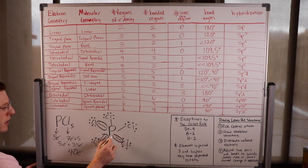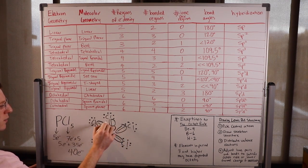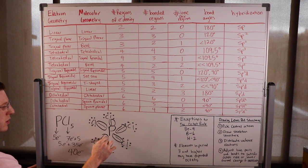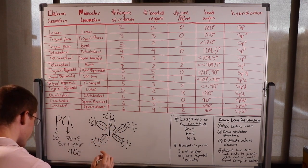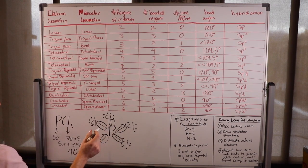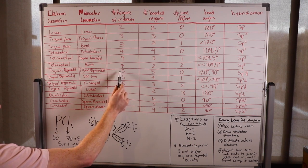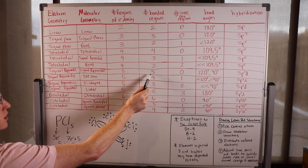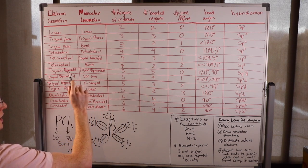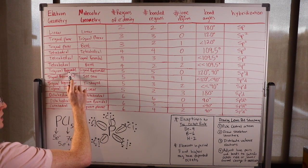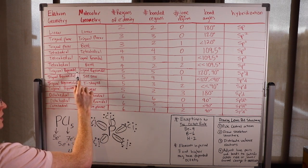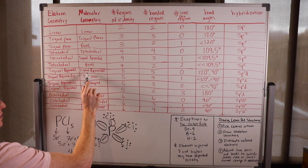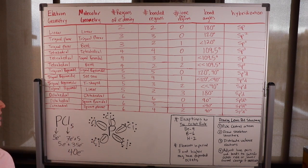Let's count up our regions of electron density. We have 1, 2, 3, 4, 5 regions of electron density and they're all bonded regions — 5 total regions of electron density, all bonded regions.